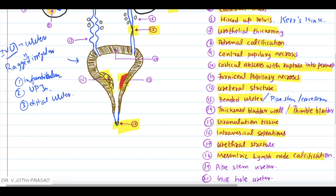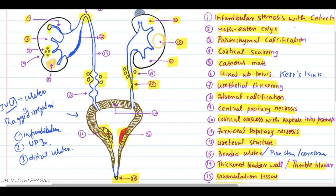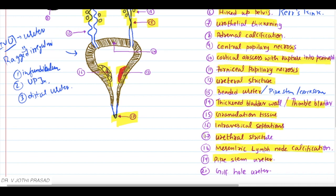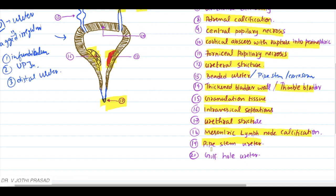The 18th finding is mesenteric lymph node calcification. This is a classical CT finding - you can see multiple mesenteric lymph nodes adjoining the ureter, calcified and causing obstruction of the ureter. The 19th finding is pipe-stem ureter. You can see the pipe-stem appearance of the ureter here.